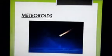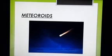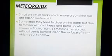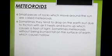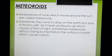Meteorites are also small pieces of rocks that move around the Sun. Sometimes they tend to drop toward Earth, but due to friction with air they heat up and burn, causing a flash of light. Sometimes meteorites do not fully burn and fall on the surface of the Earth, causing a hollow or depression on the ground.